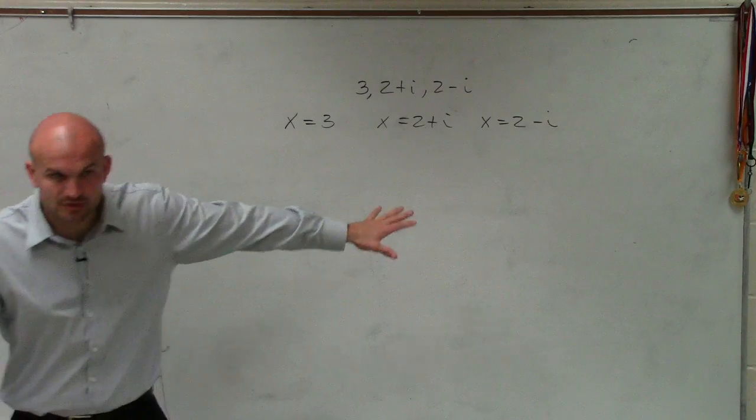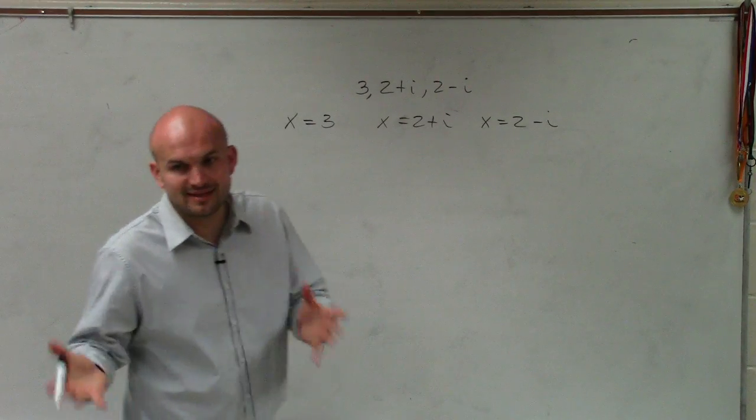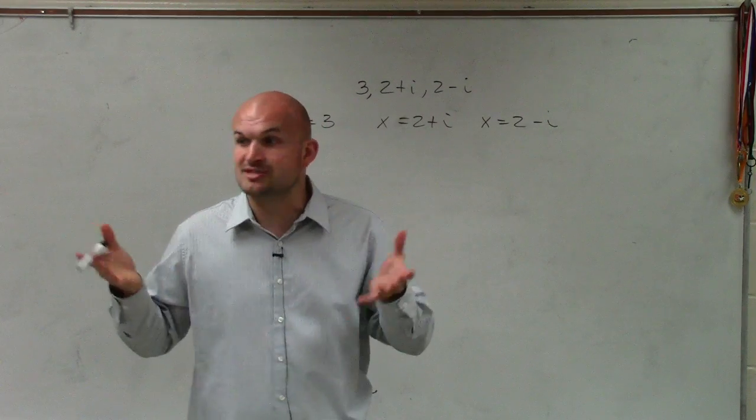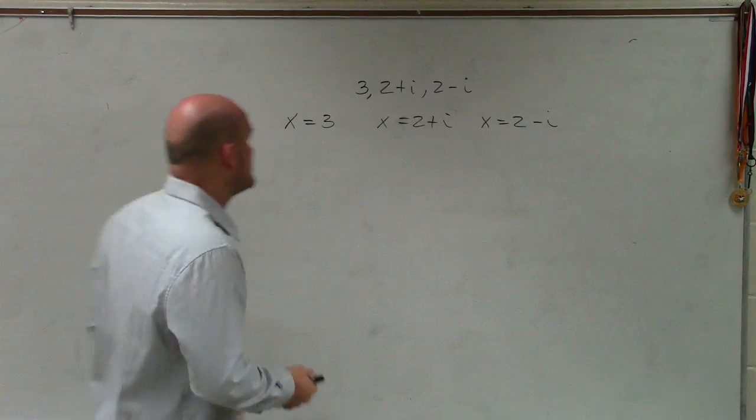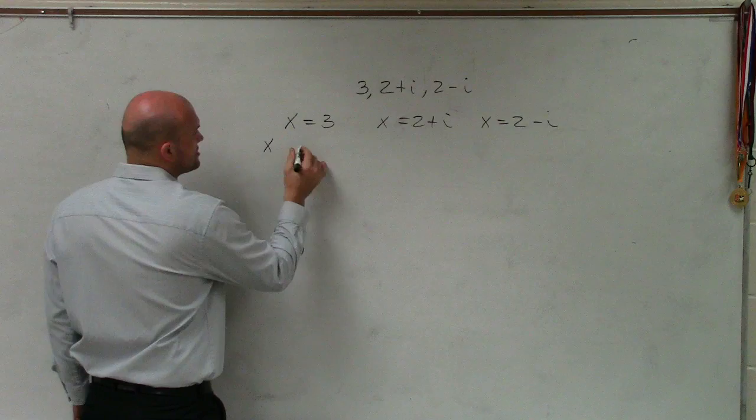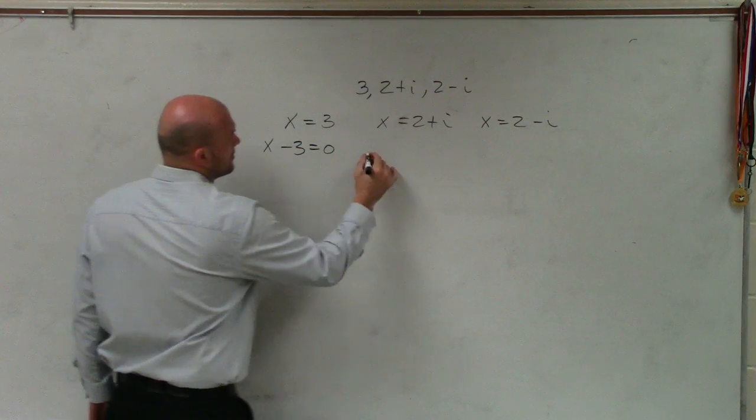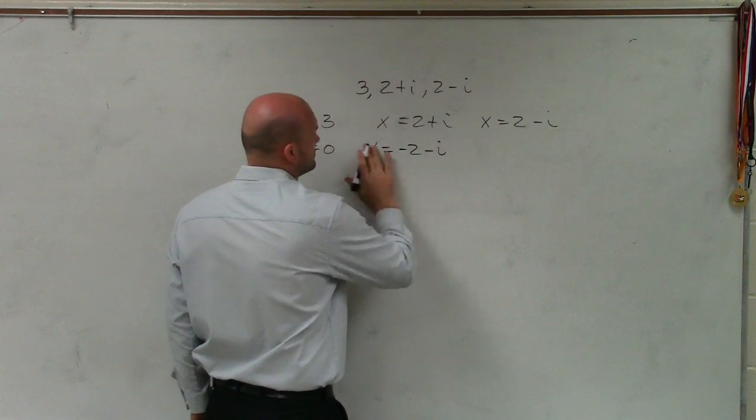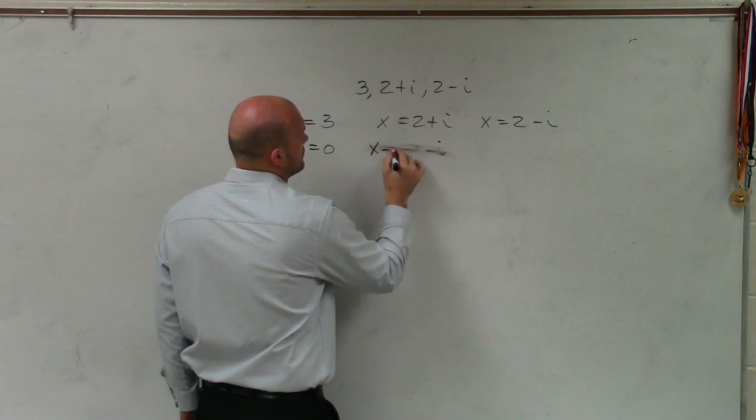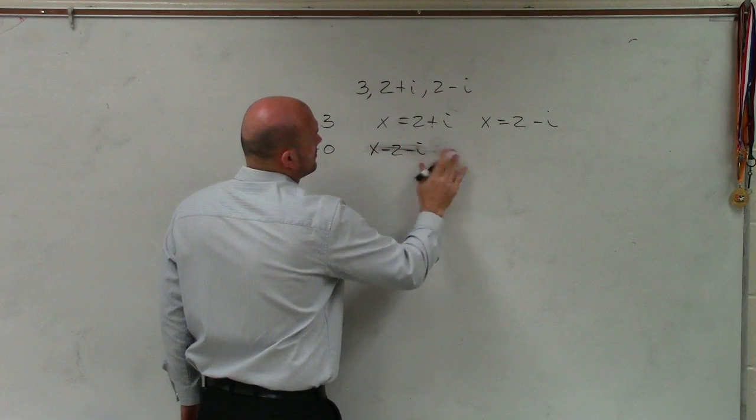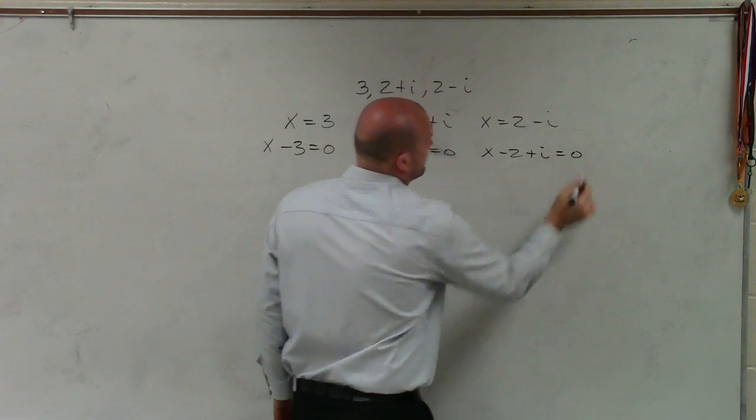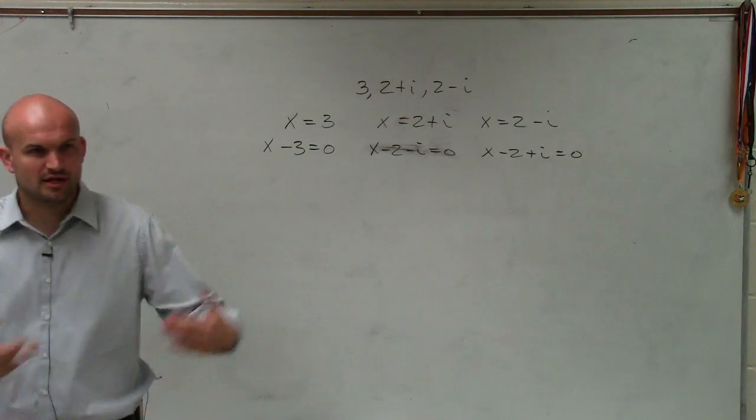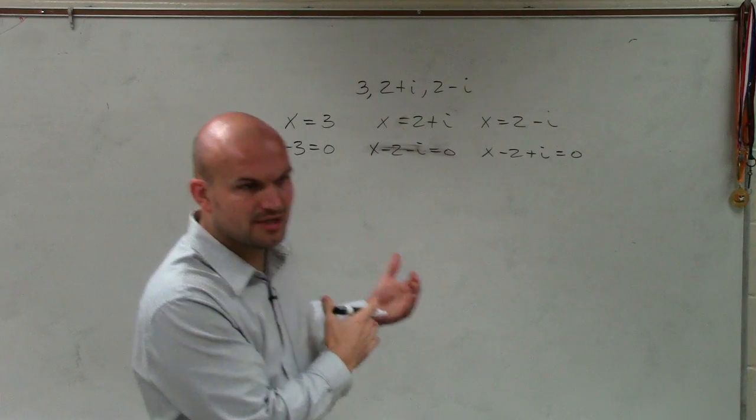So now we have them set equal to x. Well, remember, where did we get them set equal to x? That was by applying the zero product property, which means they all had to be set equal to zero. So now I'm just going to rewrite these, all set equal to zero.